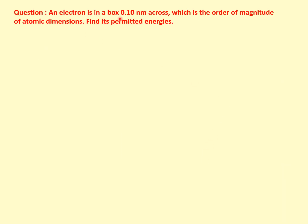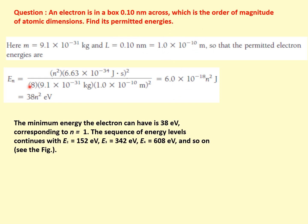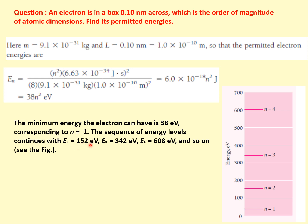Here is an example: an electron is inside a box of 0.1 nanometer, which is on the order of atomic dimensions, so we can compare it to an electron inside an atom. Using En = n²h²/8mL² with the electron mass and the given length, converting joules to electron volts gives En = 38n² eV. For n = 1, E₁ = 38 eV; for n = 2, E₂ = 4 × 38 = 152 eV. These are the discrete energy states inside the box.